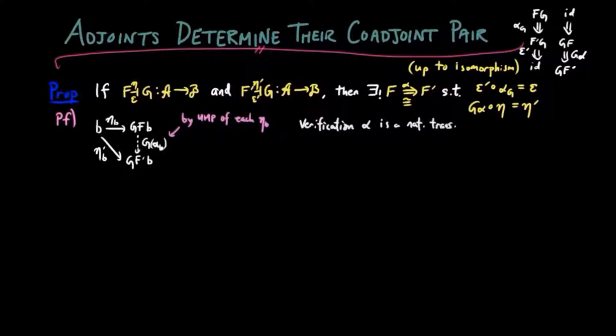We verify alpha defines a natural transformation. Given a b-morphism f, we want to show the following square commutes. In other words, that g on f prime f alpha b eta b equals g on alpha prime b ff eta b.